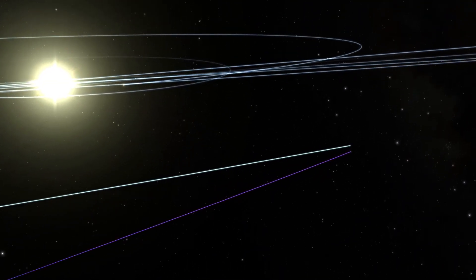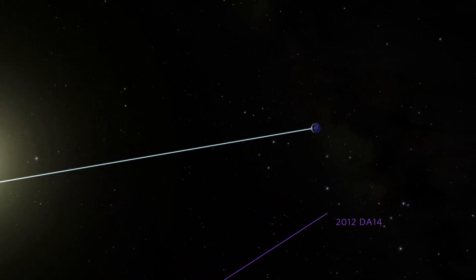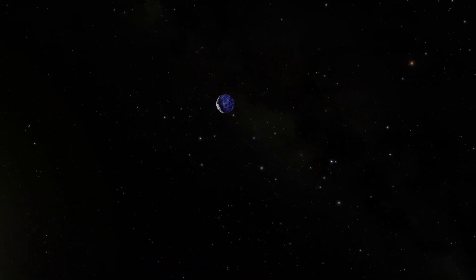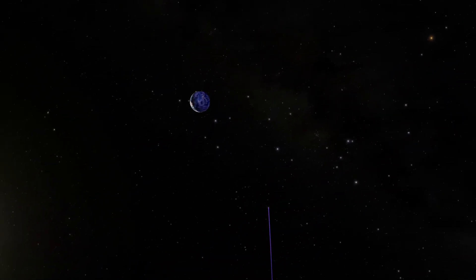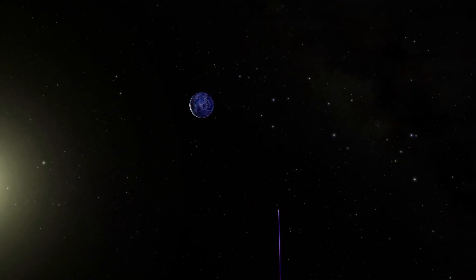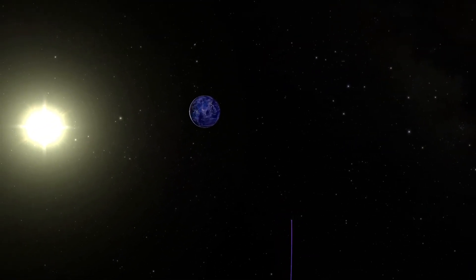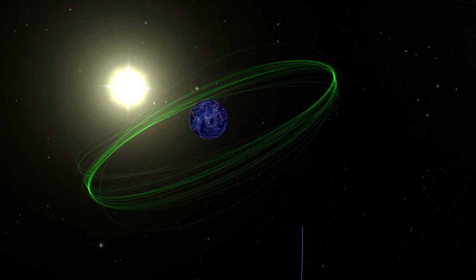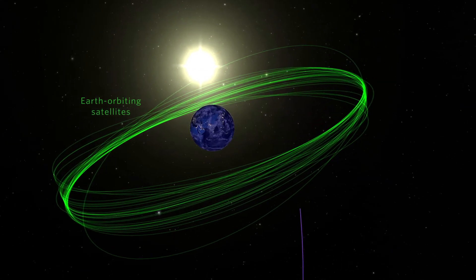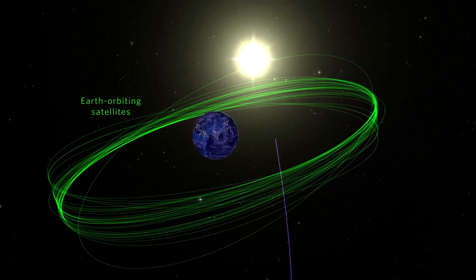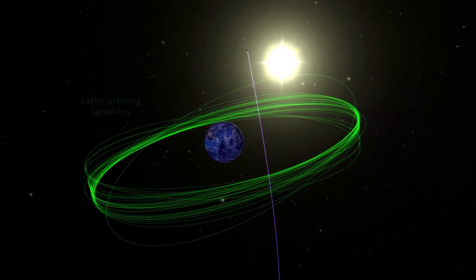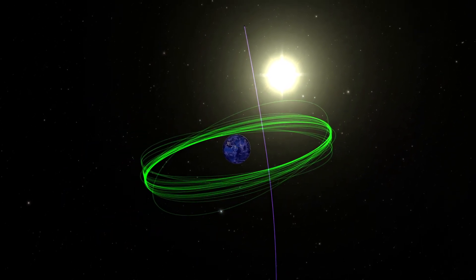On February 15th of this year, asteroid 2012 DA14 will pass remarkably close to Earth, about 17,000 miles away. That sounds pretty far away, but in astronomical terms, it's quite close. Never fear, however, asteroid 2012 DA14 will not hit our planet.